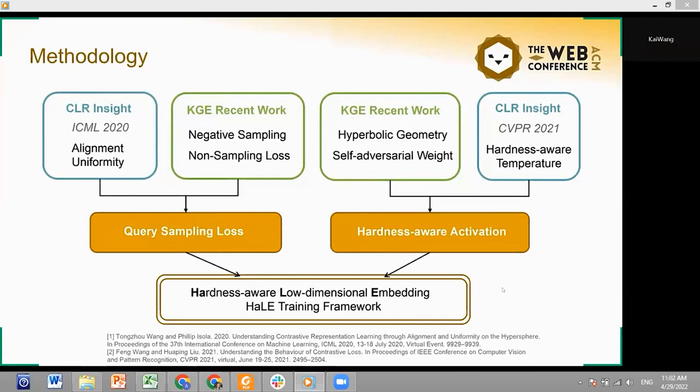First, in an ICML 2020 paper, scholars found that the contrastive learning loss is to achieve two properties: alignment and uniformity. This insight inspired us to propose a novel loss function based on query sampling to overcome the drawbacks of negative sampling loss.